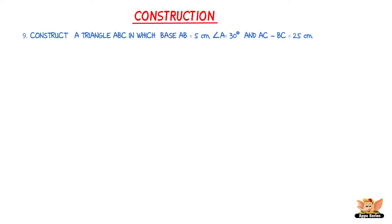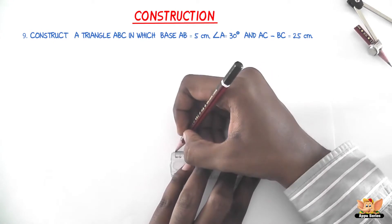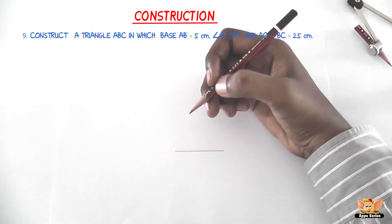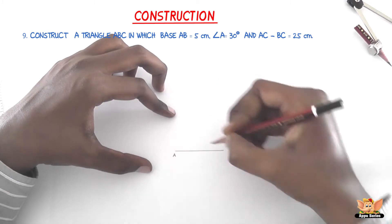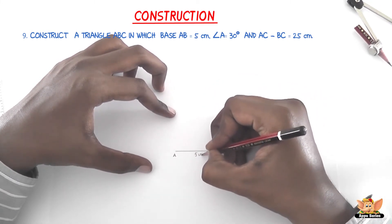So the first step in this case is to draw the base AB equals 5 cm. So we've got the base AB which is equal to 5 cm.